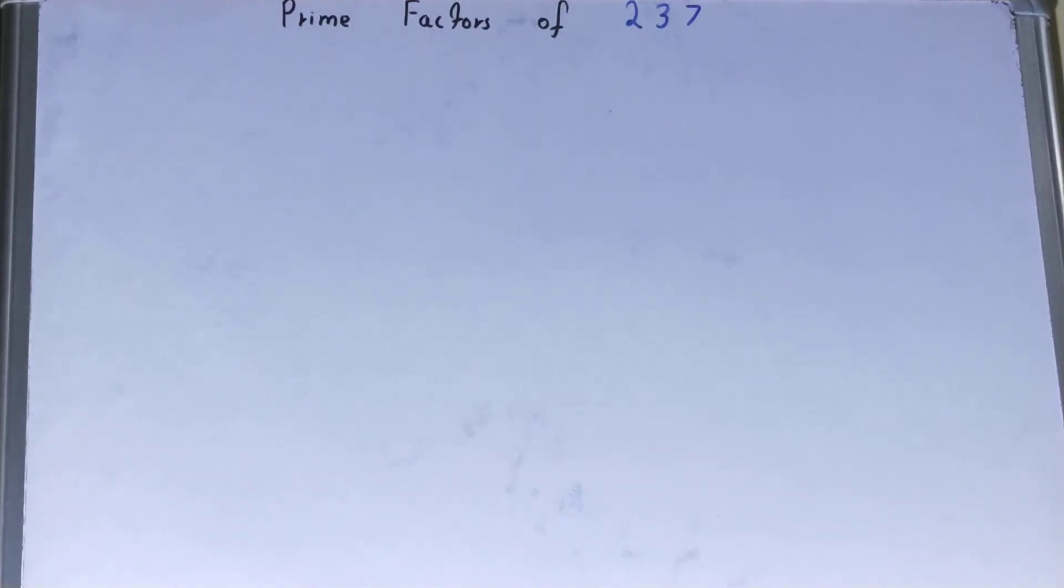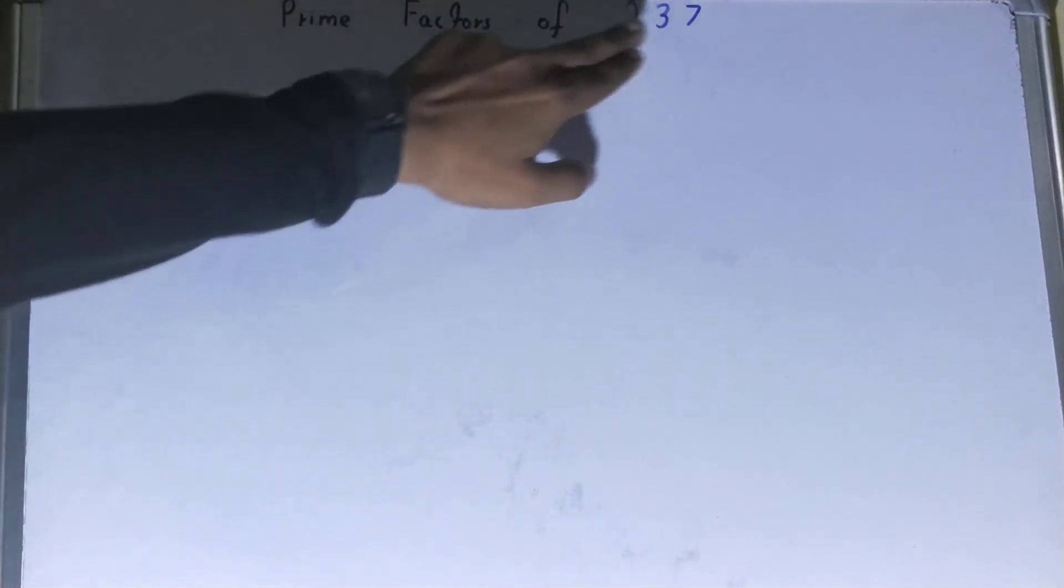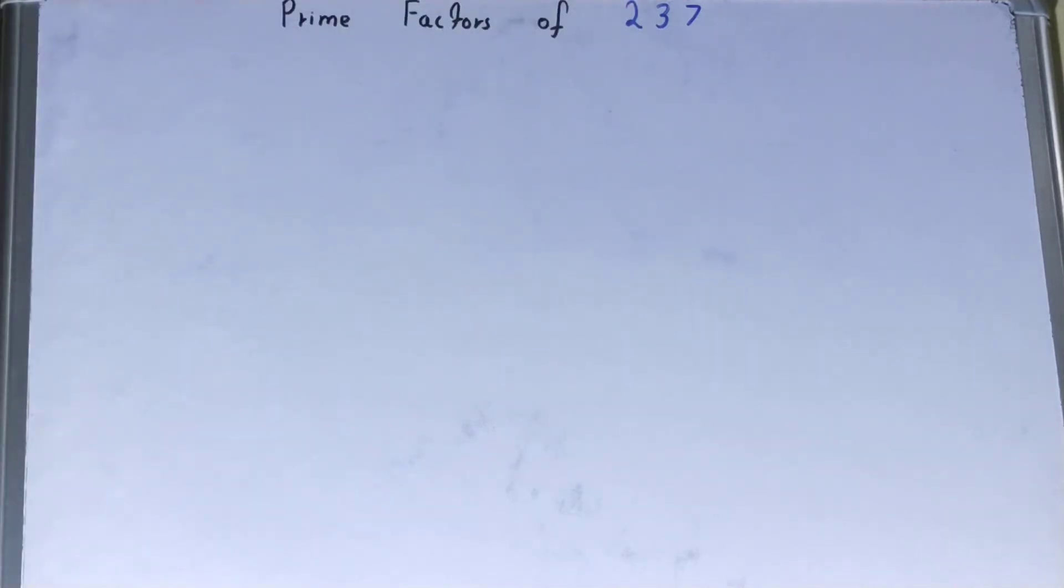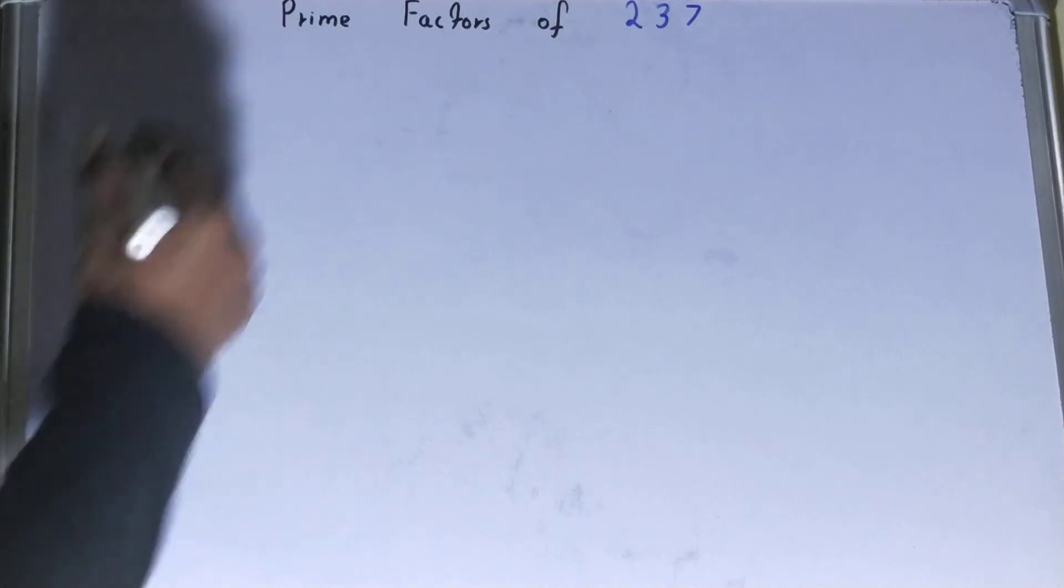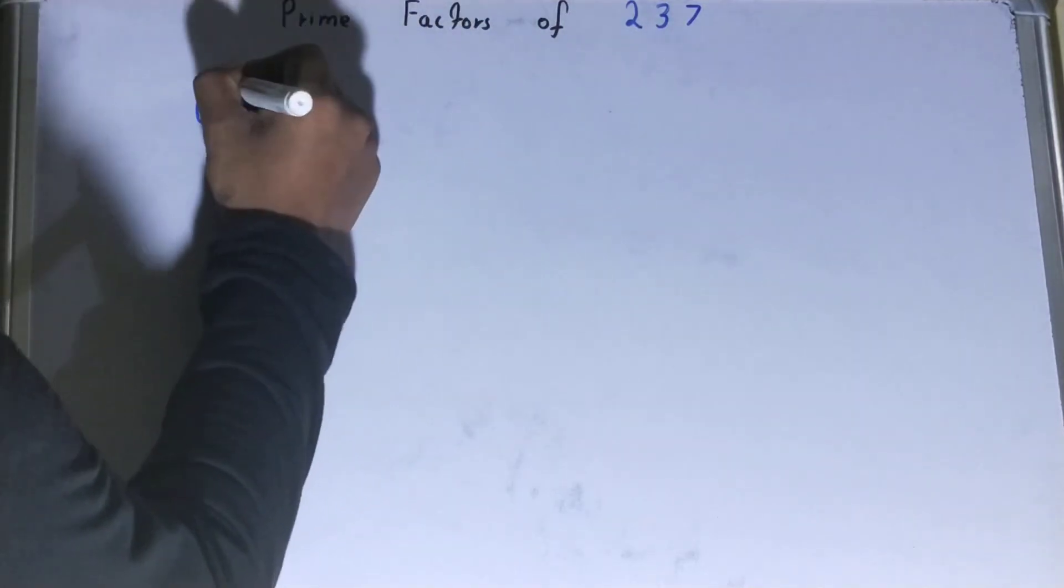Hello friends, and in this video I'll be helping with the prime factors of the number 237. So let's start. To find out prime factors of the number 237, you need to write the number like this.